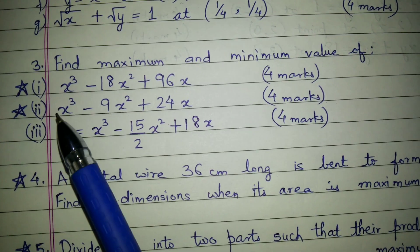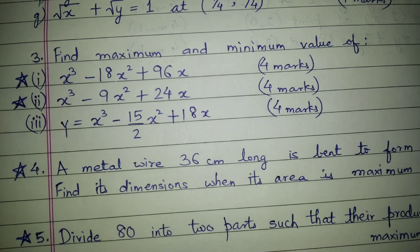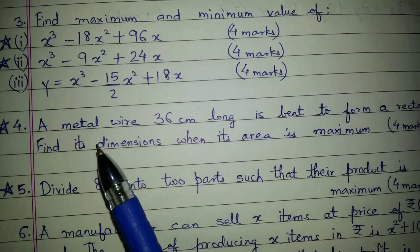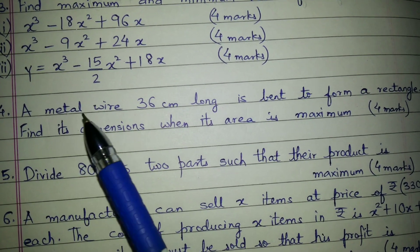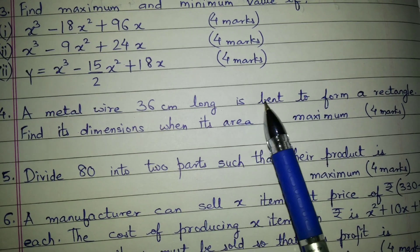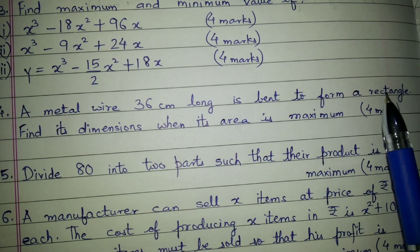So question number one and question number two are most important and these three questions are most likely. Then question number four is a word problem where a metal wire 36 centimeter long is bent to form a rectangle. Find its dimension when its area is maximum.